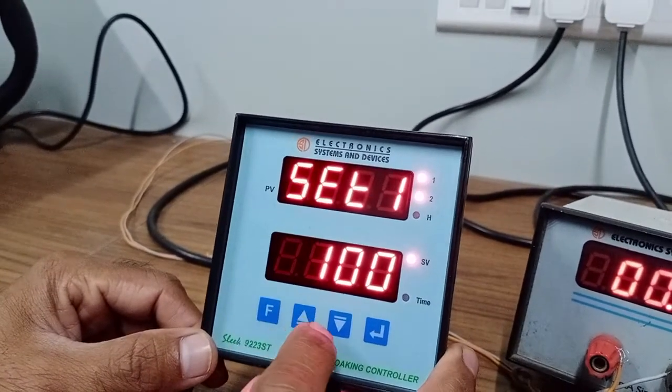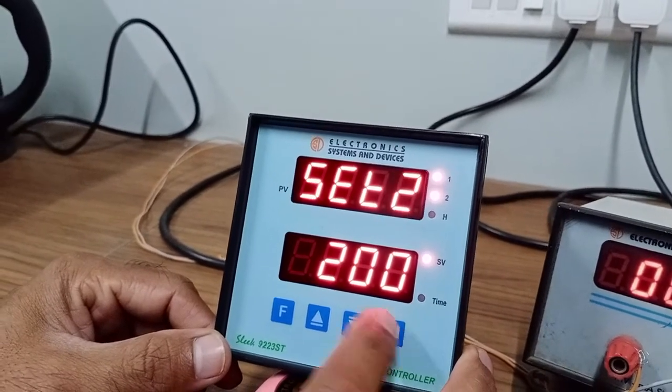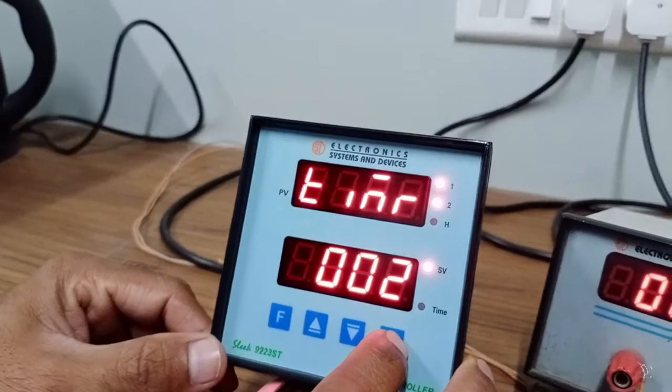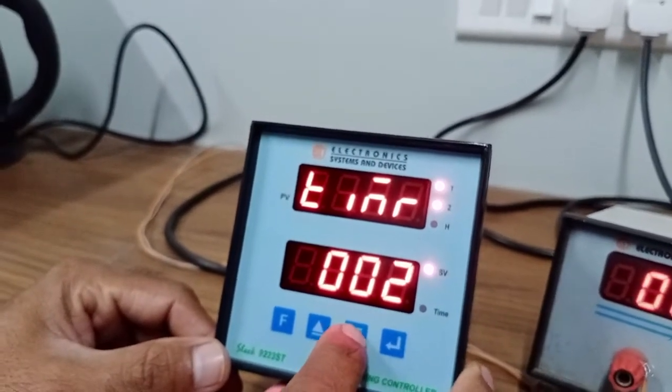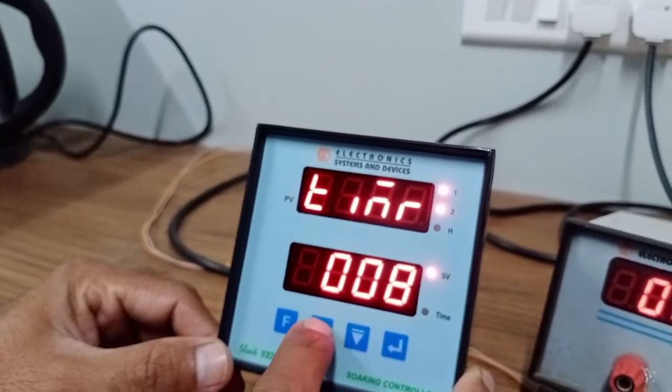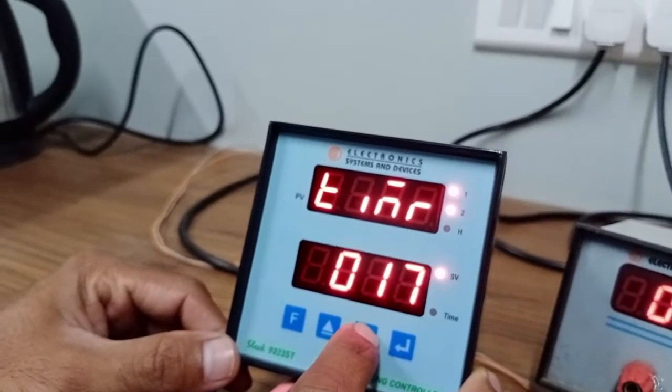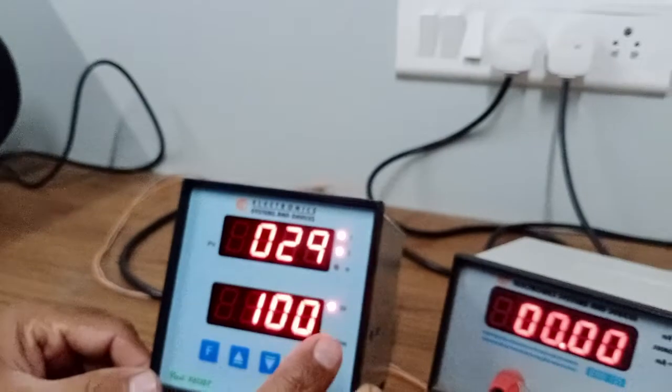Now in the same way there is set point 2. We will not go through the set point 2. We will go to the soak timer. This is the soak timer. The value of the soak timer can be kept minimum is 2 minutes and maximum you can keep it up to 600 minutes. That is 10 hours. For testing purpose we will keep it 2 minutes.